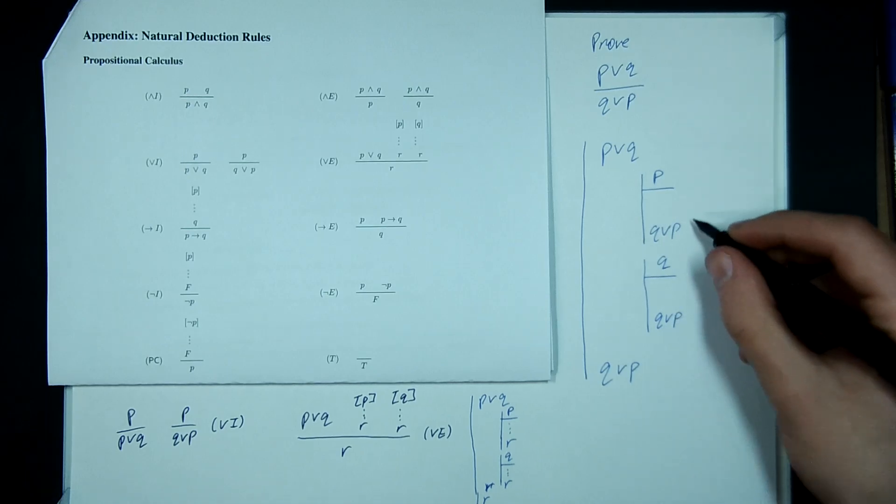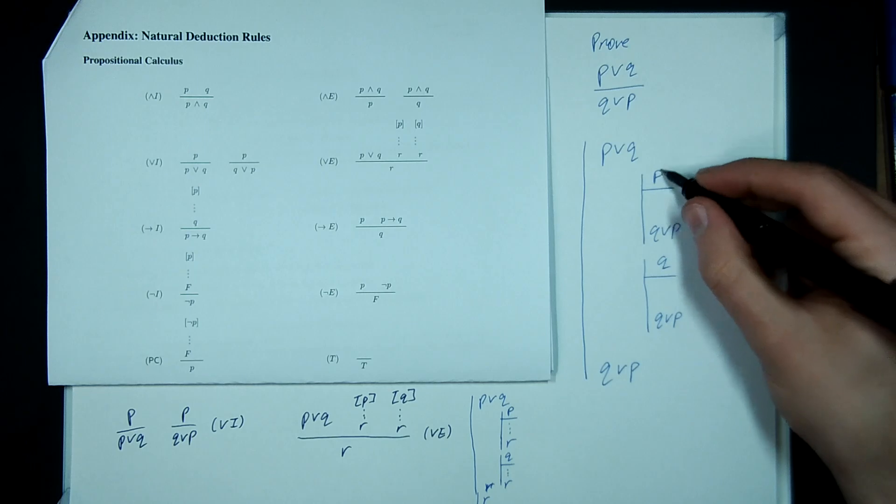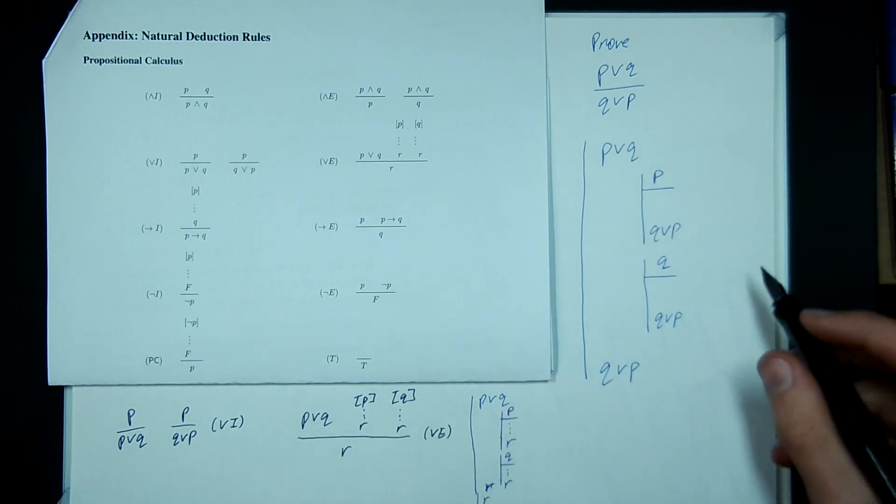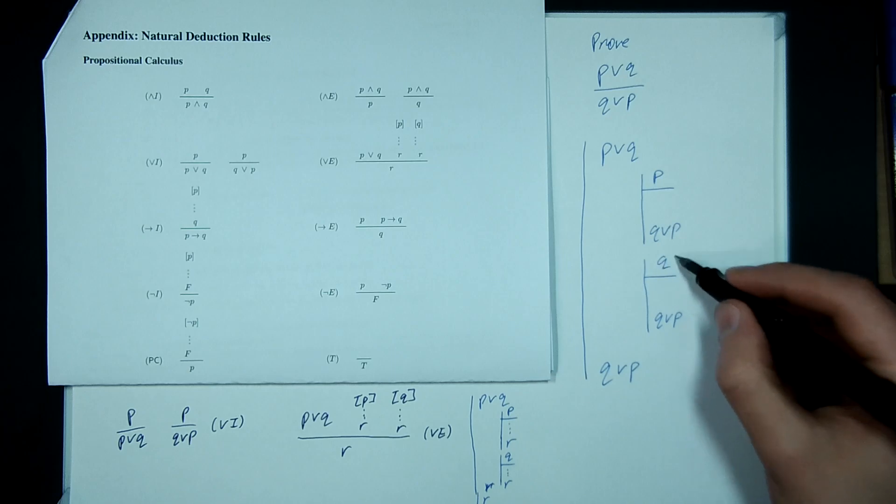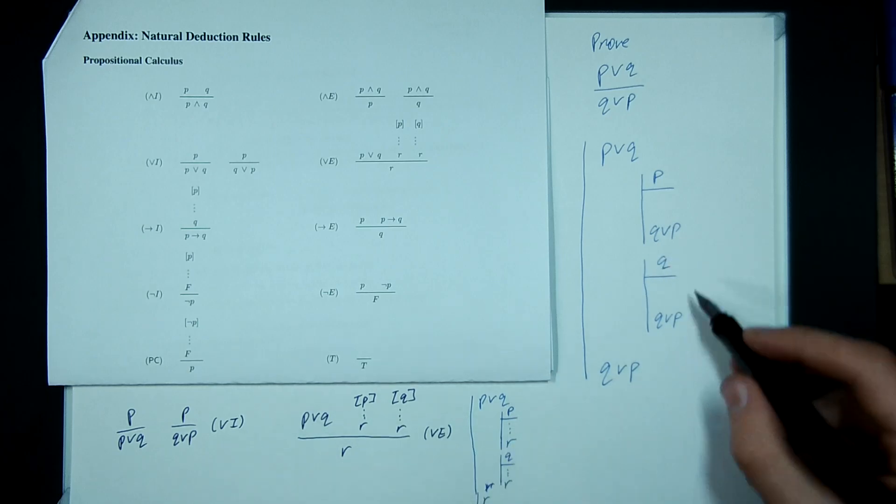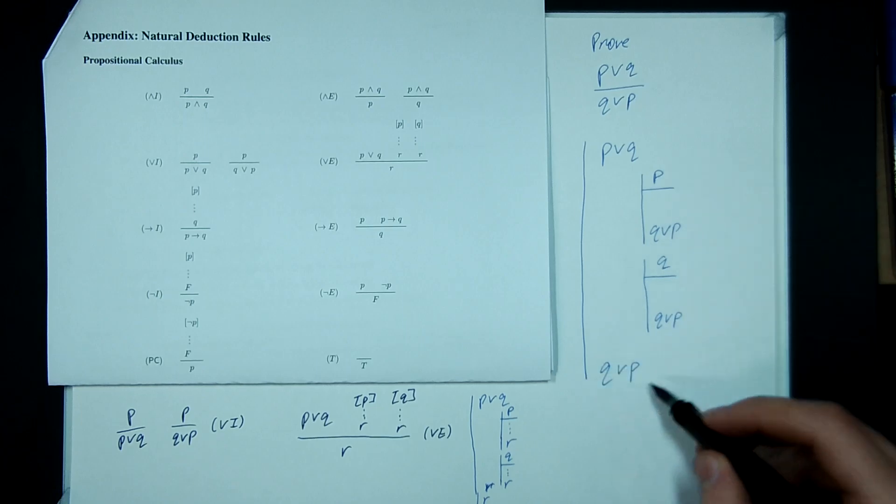I mean, at this point, the proof is done because these are just one-liners. If I have P, then I have Q or P by OR introduction. Similarly, if I have Q, then I have Q or P by OR introduction. Both cases work. Therefore, Q or P is true.